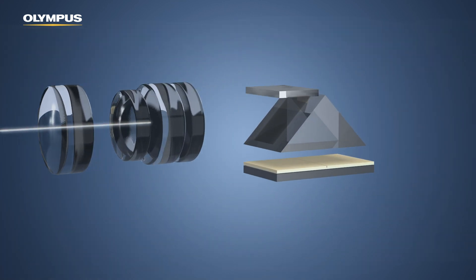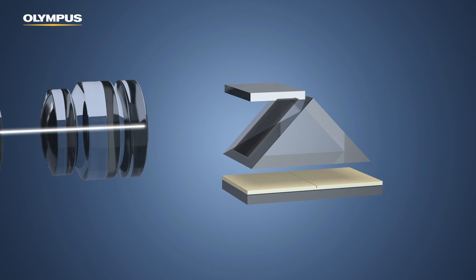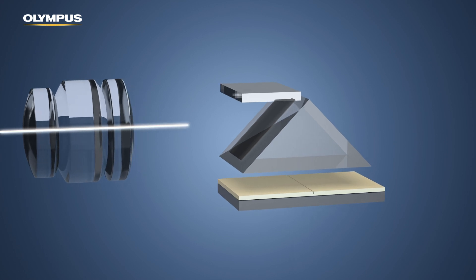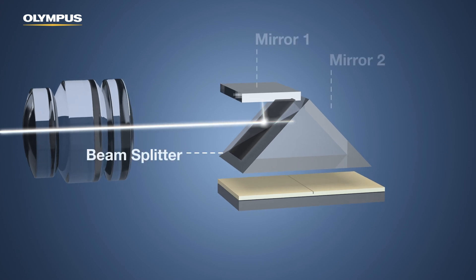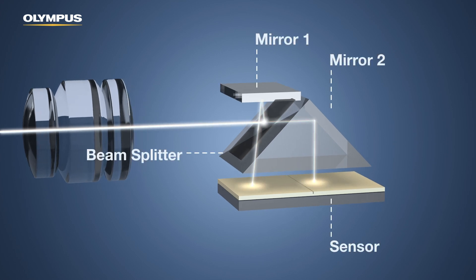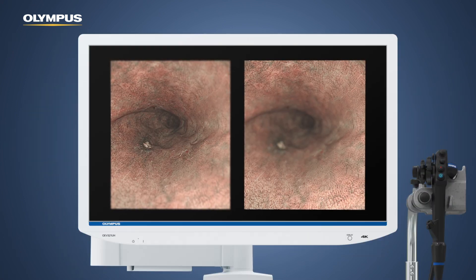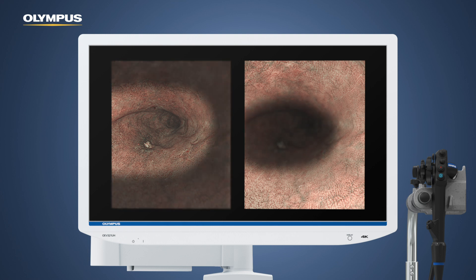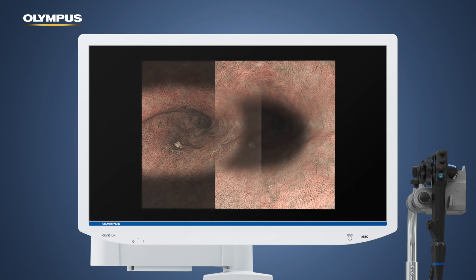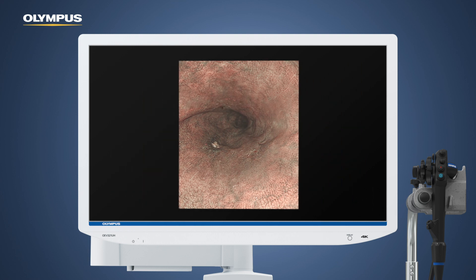The incoming beam of light is divided by the beam splitter and reflected via two mirrors to the sensor. This technology projects two images with identical content that however exhibit different focal lengths, and combines those images into one image in total focus.